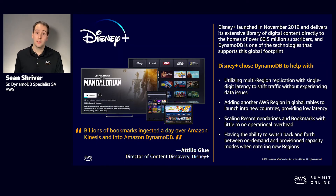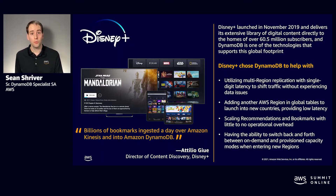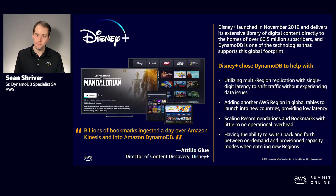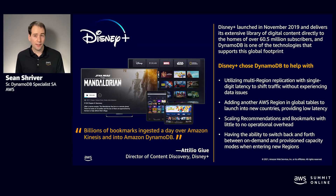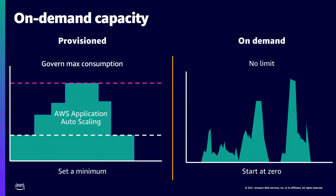One unique thing that Disney streaming services did is begin with on-demand capacity and later transition to provisioned mode. This means they let DynamoDB scale their tables in response to traffic, trading for a higher cost per capacity unit consumed. DynamoDB offers two types of capacity: first, pre-provisioned capacity bought by the hour in units of capacity, and second, on-demand, where you pay per request at the end of the month.